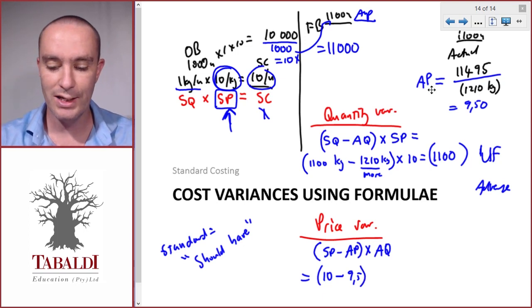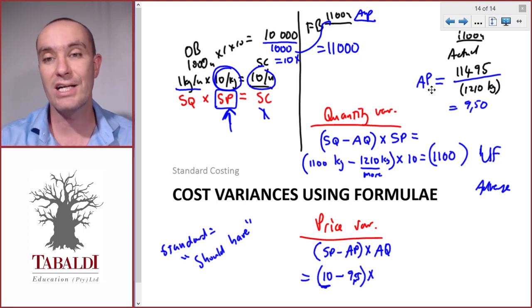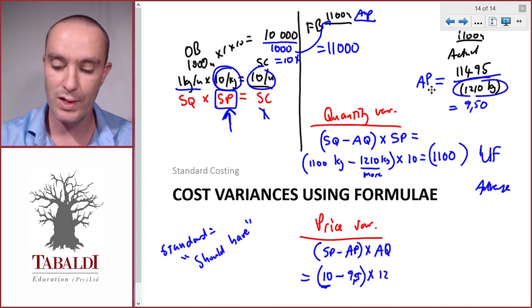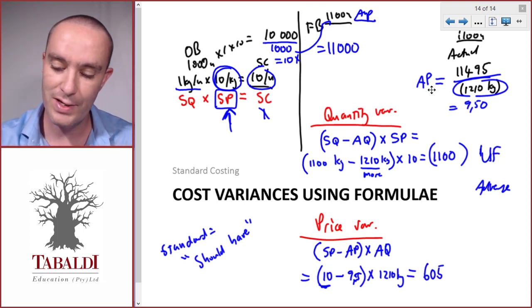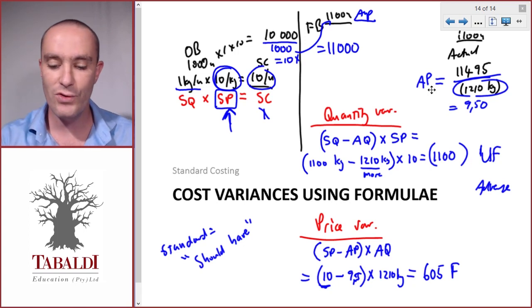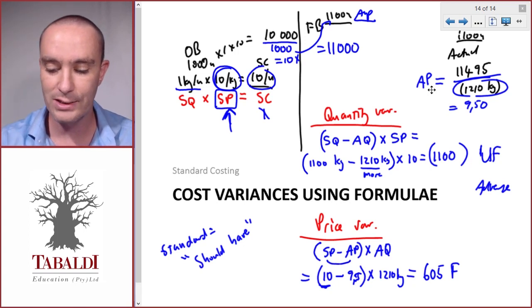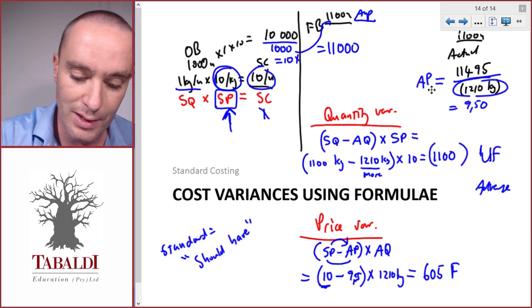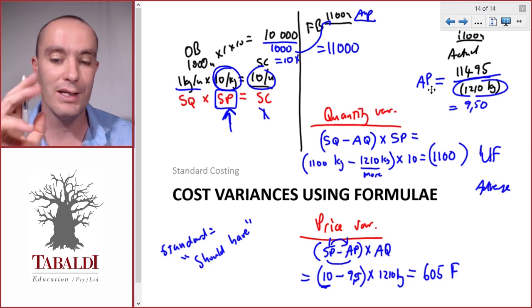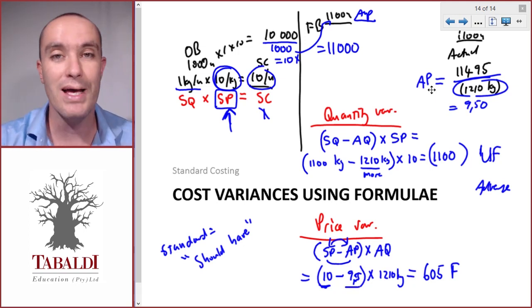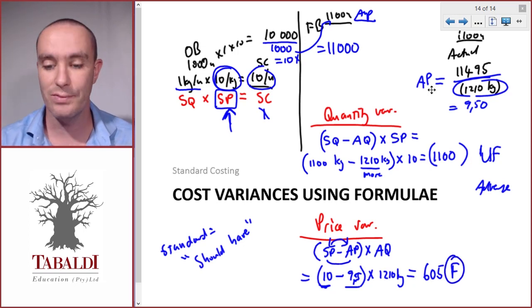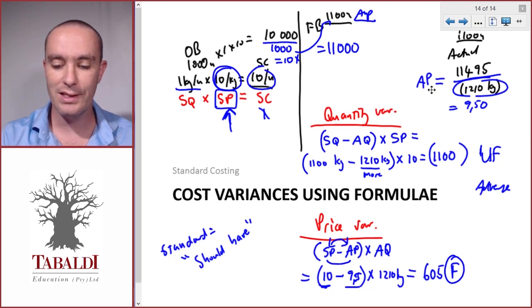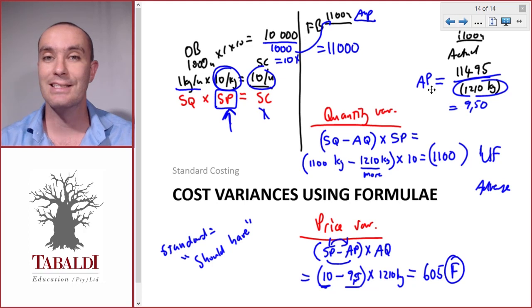We paid $0.50 less per kilogram than we should have. Multiplying by the actual quantity of 1,210 kilograms gives the price variance — favorable, because paying less than standard means we saved money. If standard price minus actual price is positive, the variance is favorable.